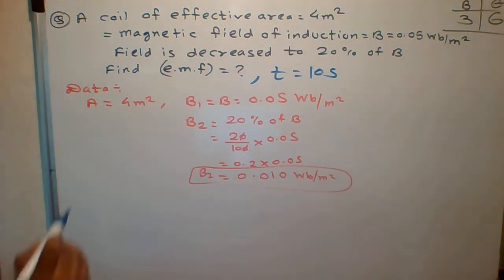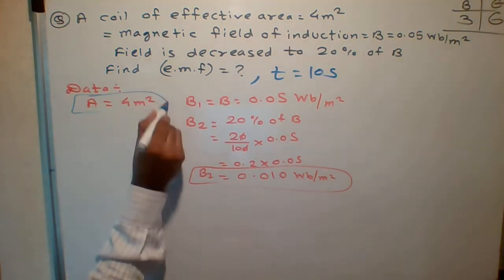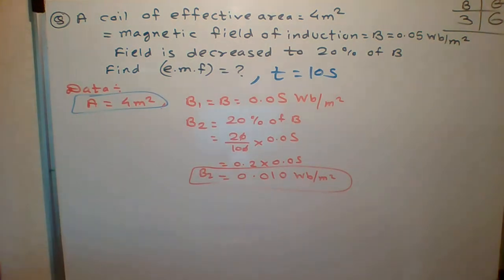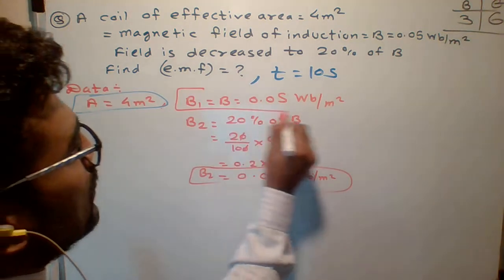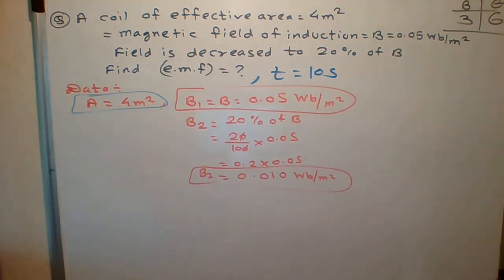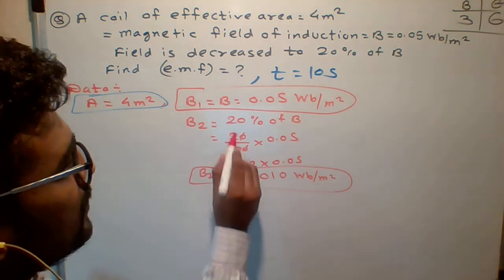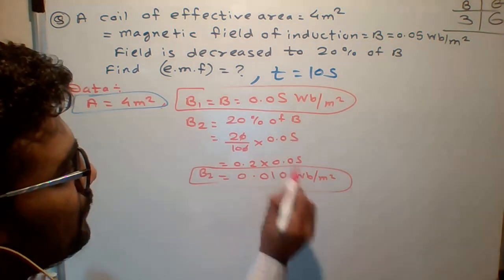Students, what is given in the numerical? Area of the coil is given, initial field is given 0.05 Wb/m². The field is decreased to 20%, so B2 is given as 20% of initial B, that is 0.01 Wb/m².